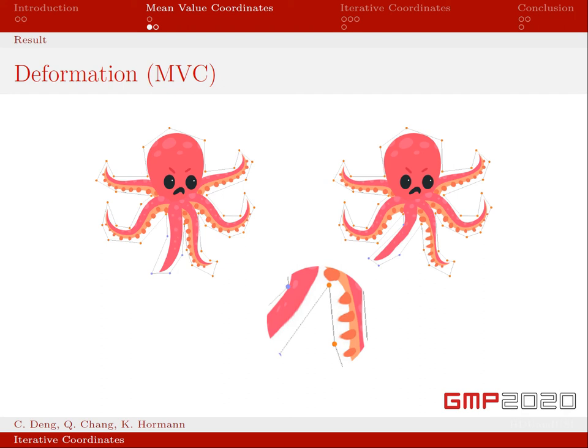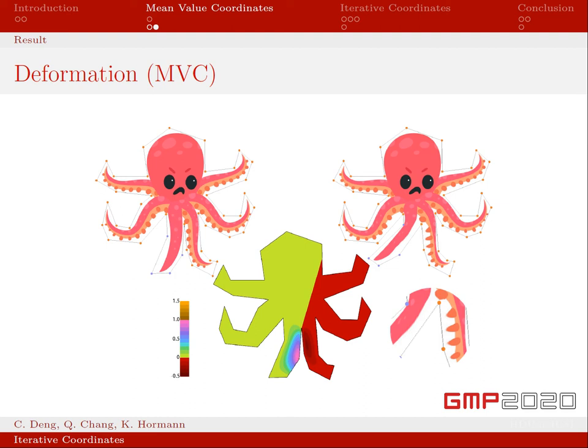The reason for this result is that there are negative values in the basis function. Look here, this is the distribution of one of the mean value coordinates in the original image. The red region indicates negative values.